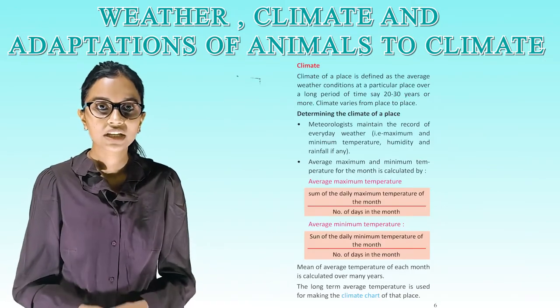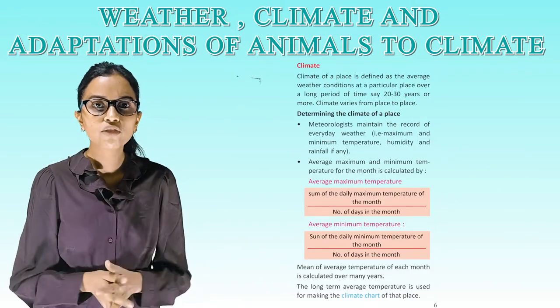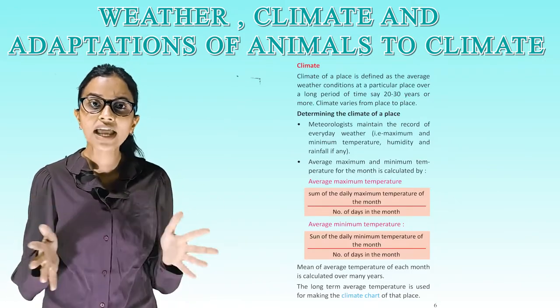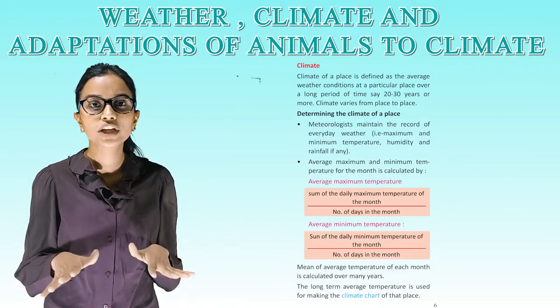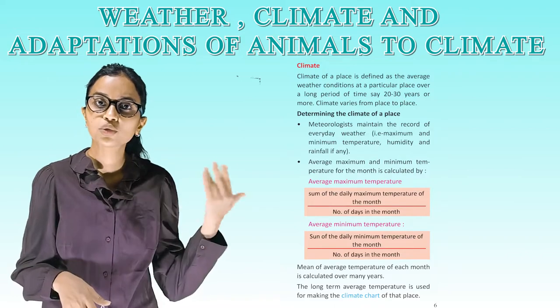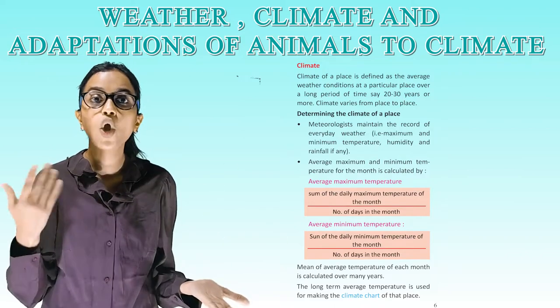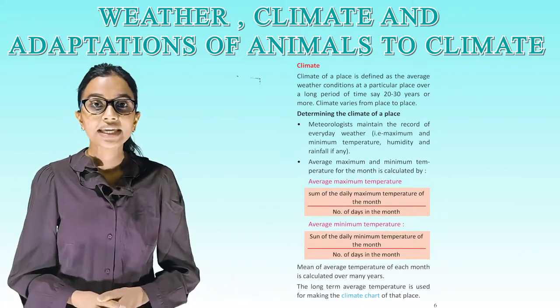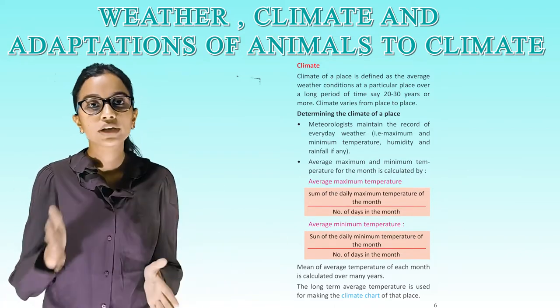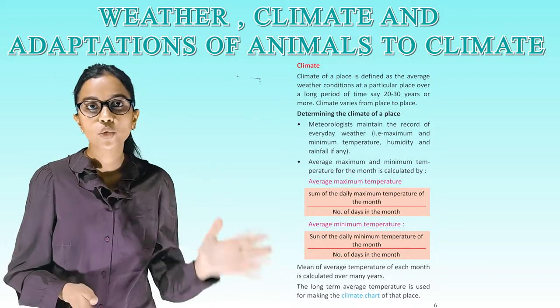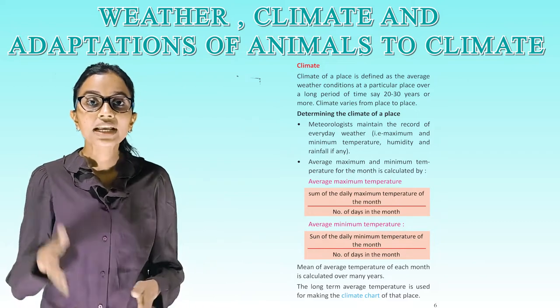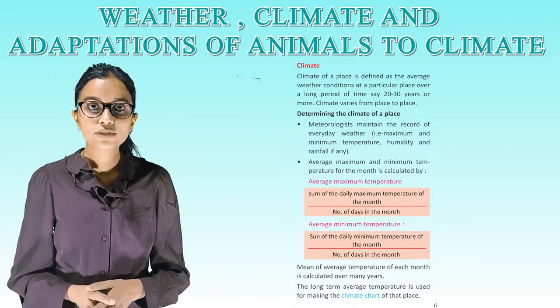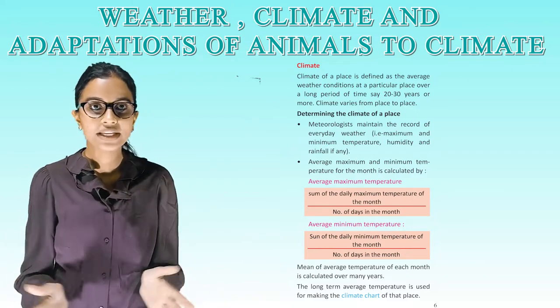Climate of a place is defined as the average weather condition at a particular place over a long period of time, say 20 to 30 years or more. Climate varies from place to place.